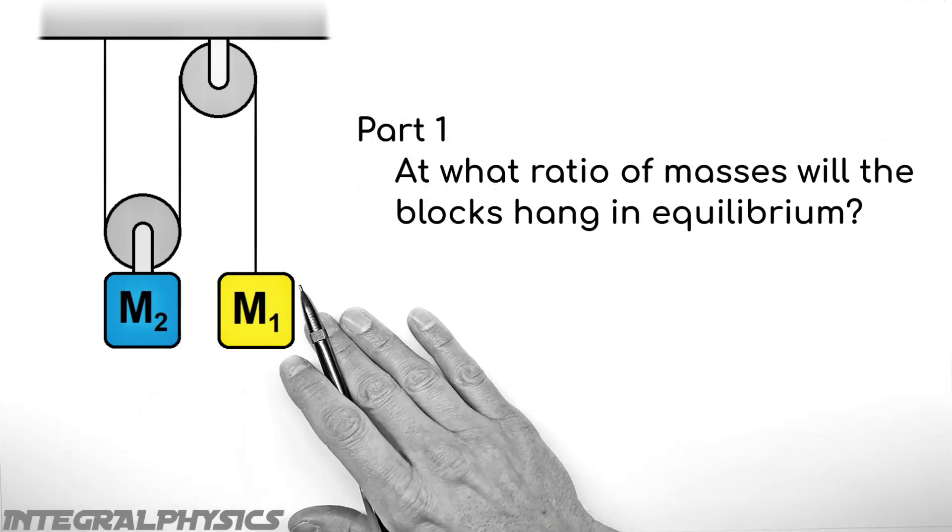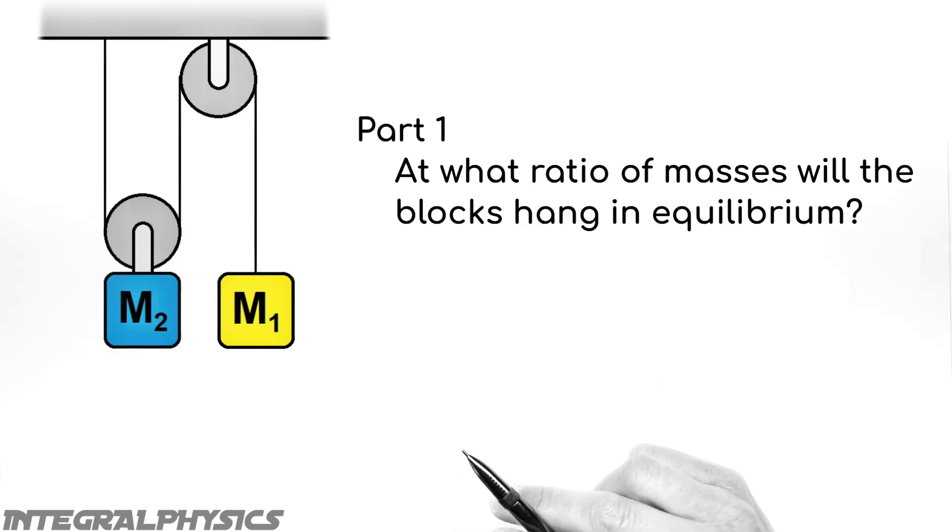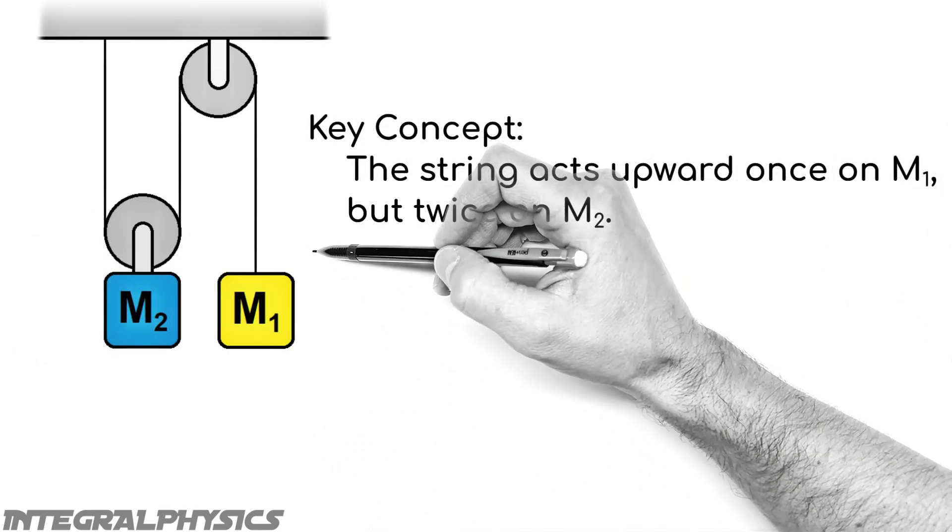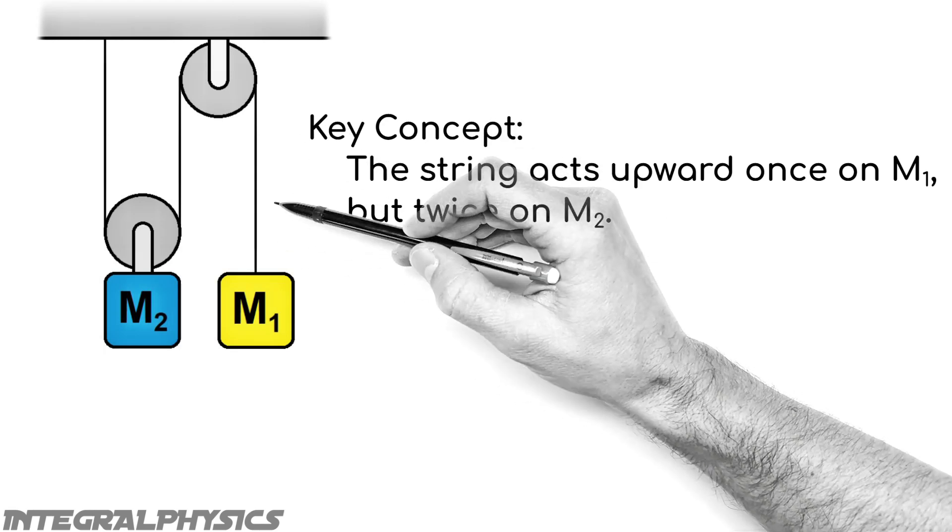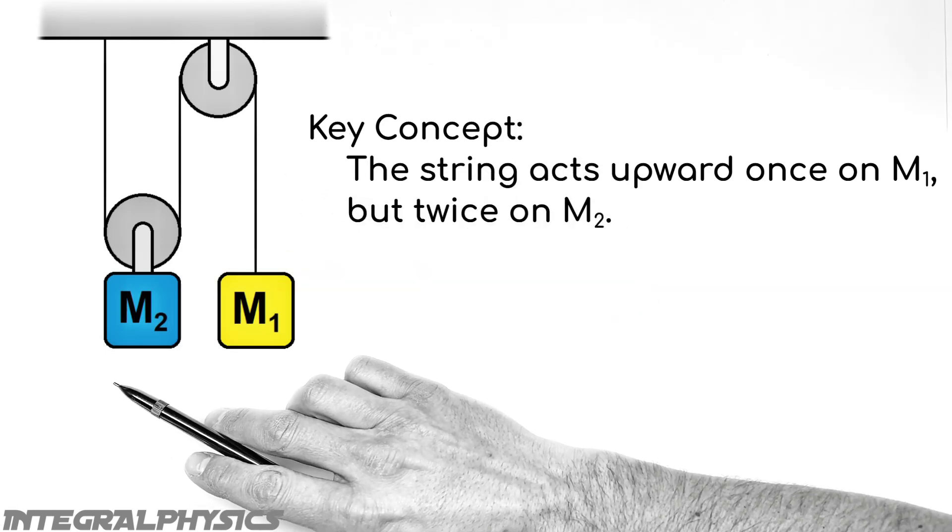So starting with keeping these blocks in equilibrium, before we dive into Newton's second law, there's a key concept that we have to understand here. And that is that the string acts upward once on this mass M1, but twice over here on this mass M2.